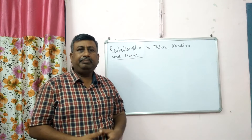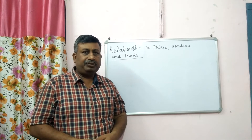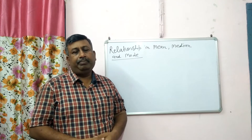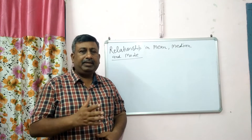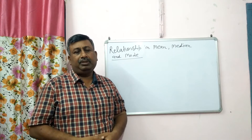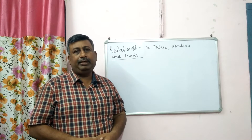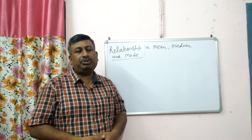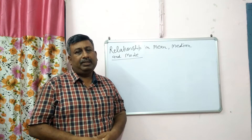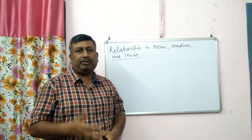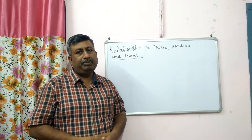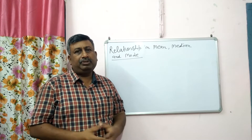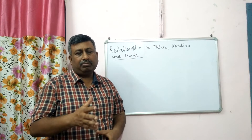As we know, mean is the average of a data, median is the middle data which divides the data into two equal parts, and mode is the most frequently occurring data. So this is mean, median, and mode.